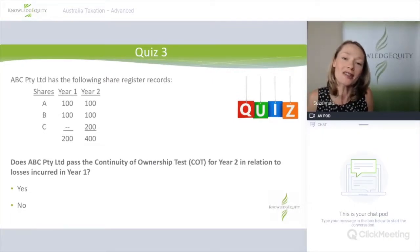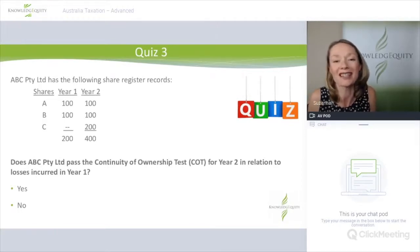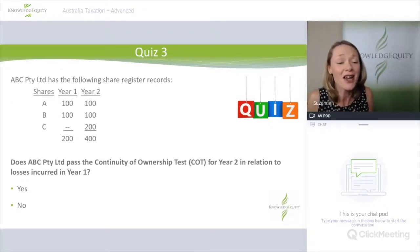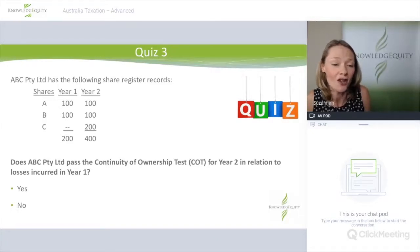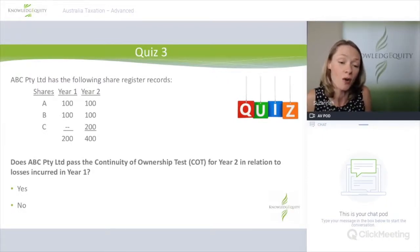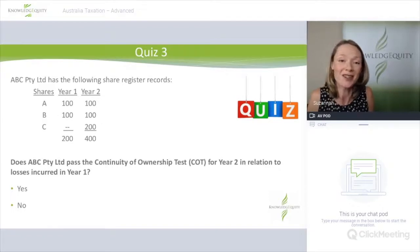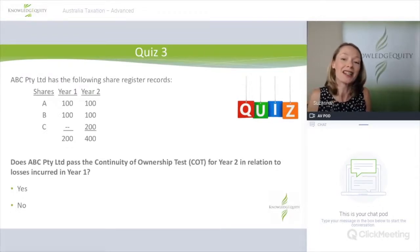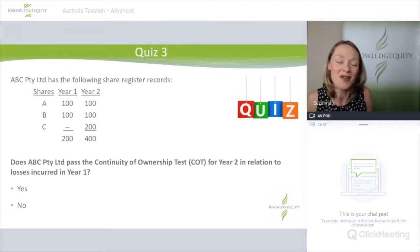Once you calculate your loss, it can be carried forward subject to the continuity of ownership test and the same business test. This quiz looks at the continuity of ownership test. ABC Limited has three shareholders: A, B, and C. In year one, only A and B held shares — 200 in total. In year two, A, B, and C hold shares, with C acquiring 200 new shares. Does ABC pass the continuity of ownership test for year two, in relation to losses incurred in year one?